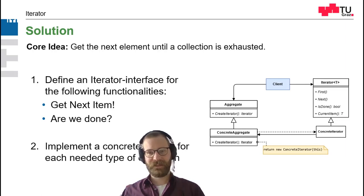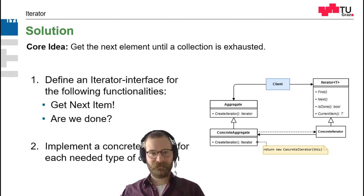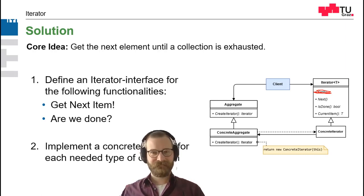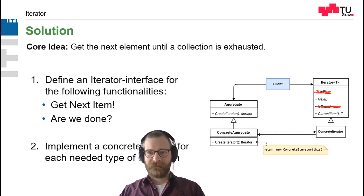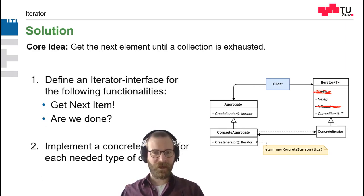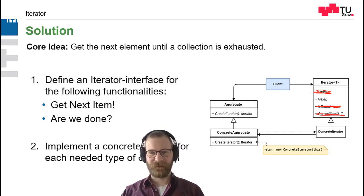But do we really need all four methods? The first method we could delete, because we can just call next the first time — when we create an iterator, the current item could already be set to the first item, so first can be scratched out. Do we need the is done method? No, we could return in next whether we are done or not. And do we need both current item and next? We can combine them: immediately return the next item on calling next, and if the list is empty, return null. So just next can solve both functionalities.